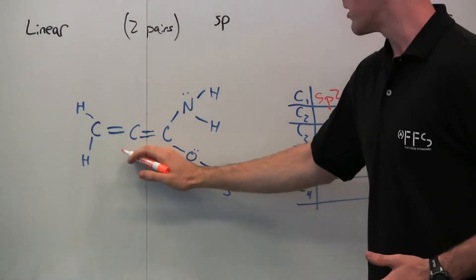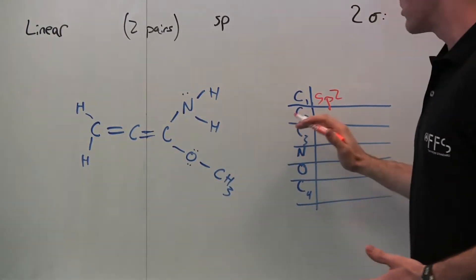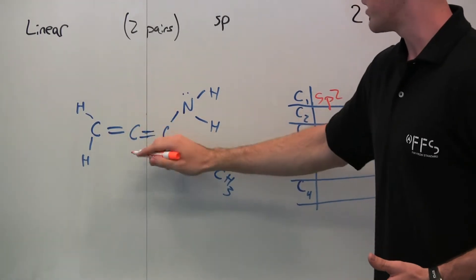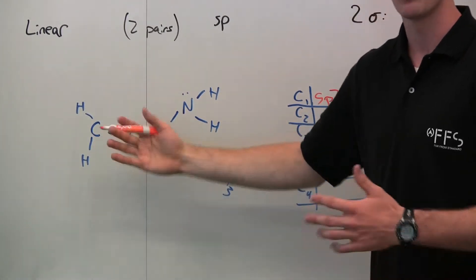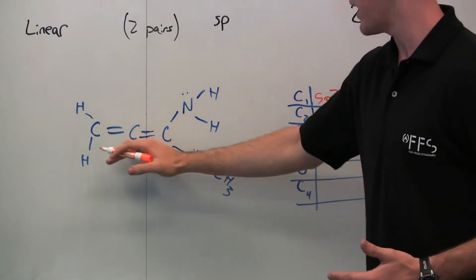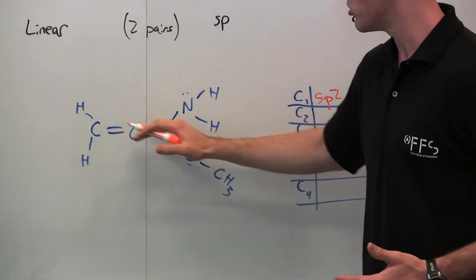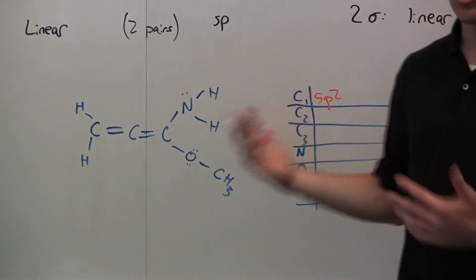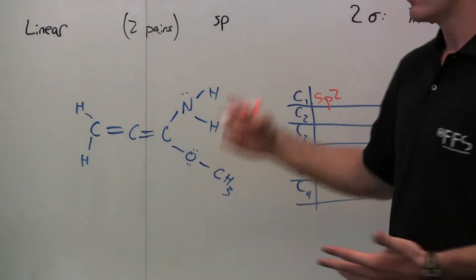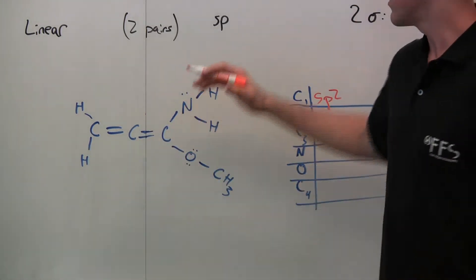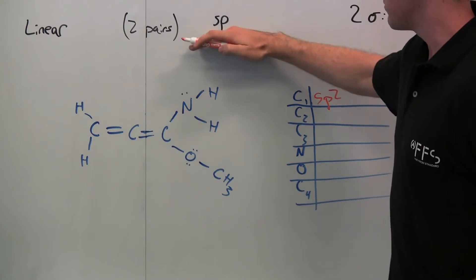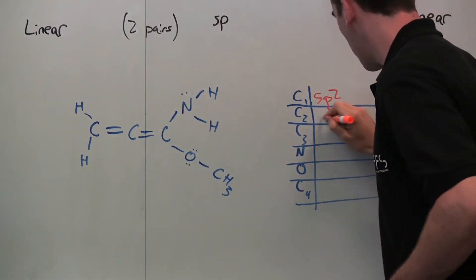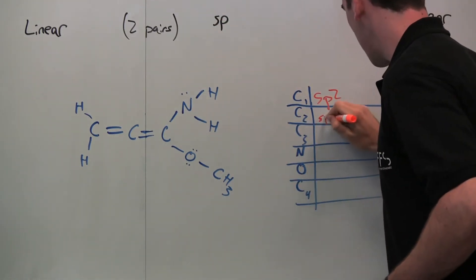This middle carbon — carbon 2 — has two sigma bonds. Remember that in a double bond, one of those bonds is actually a pi bond, so it has two sigma bonds. Two sigma bonds correlates to two VSEPR pairs, and therefore it's an SP hybridization, so carbon 2 is SP.